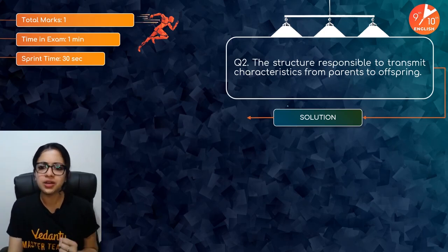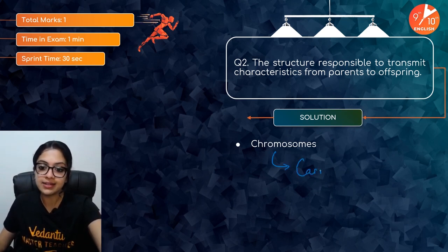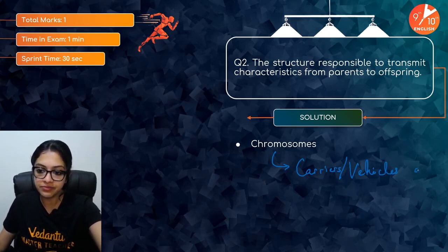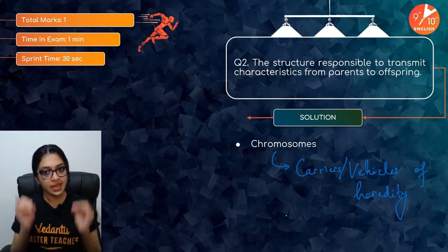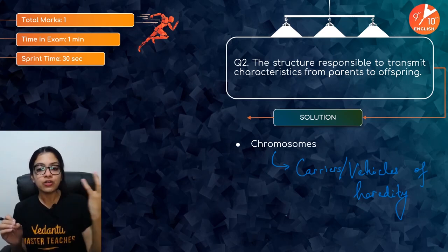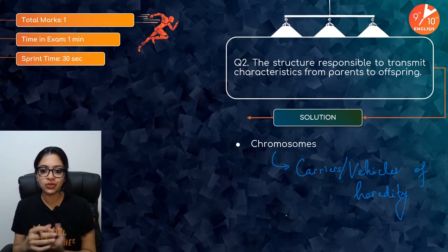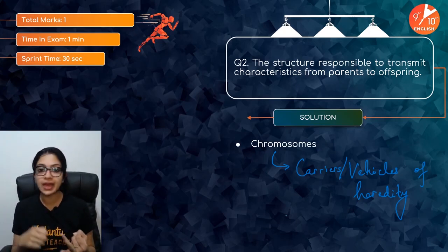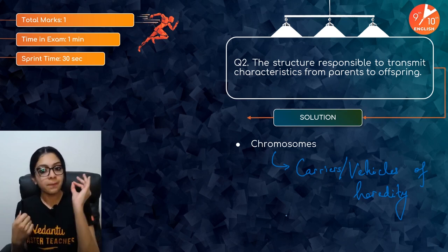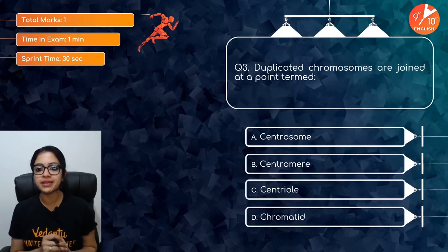Question 2: What is the structure responsible for transmitting characteristics from parents to offspring? The answer is chromosomes, because chromosomes are the carriers — the vehicles of heredity. However, read carefully: if the question is more specific the answer could be genes, alleles, DNA, or chromatin. Make sure you read every question very carefully.